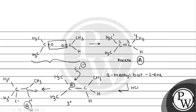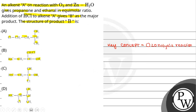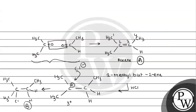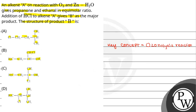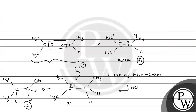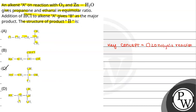So product B has both methyl groups on one carbon with chlorine — that matches option C: CH3-CH2-C(Cl)(CH3)-CH3. The remaining part is CH2CH3. So option C is the answer to this question. Hope you understood it well, thank you so much.